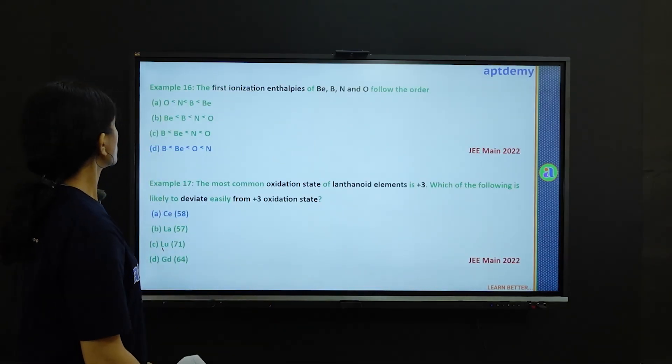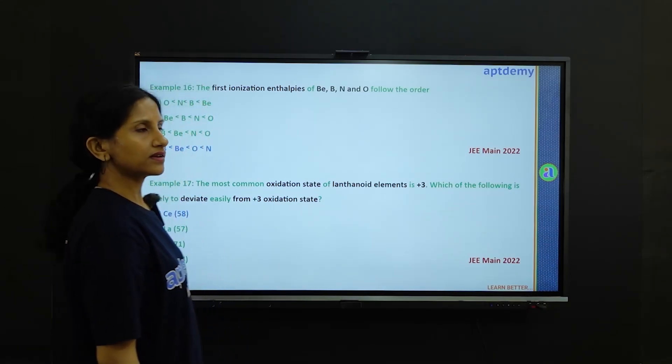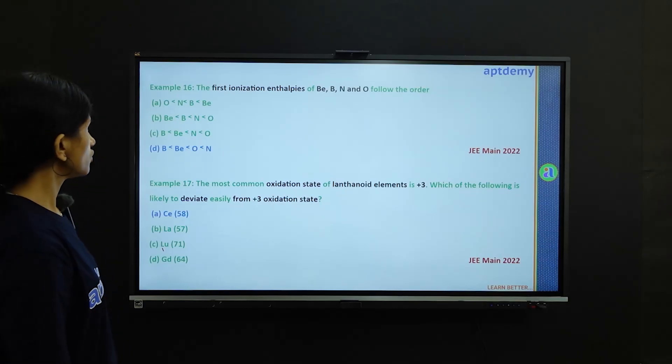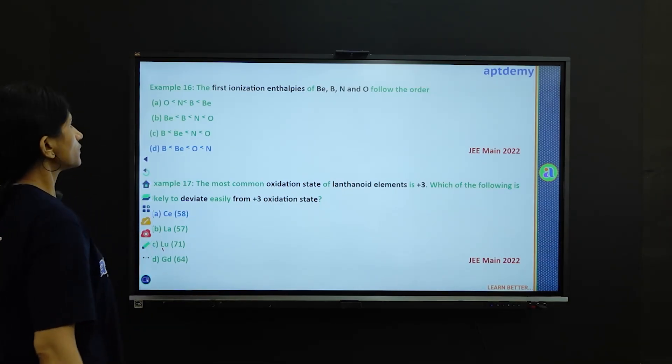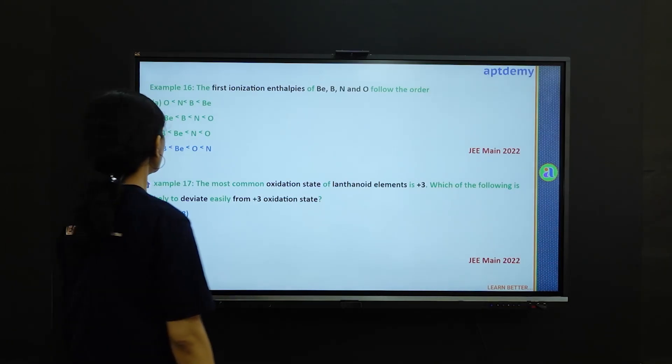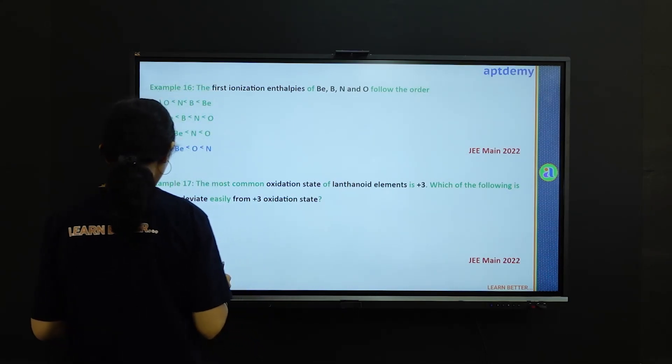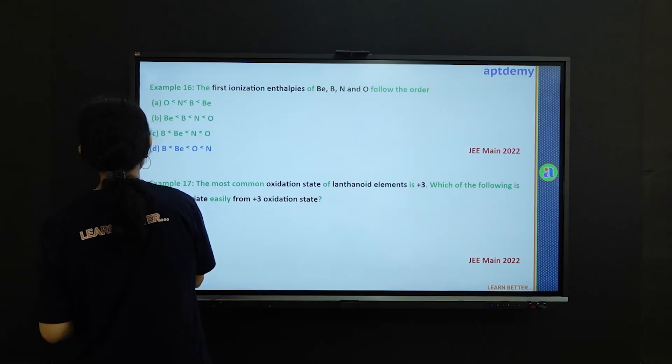Now on to example 16. These two problems are given from JEE Main exams of 2022. Example 16 is asking the first ionization enthalpies of beryllium, boron, nitrogen, oxygen will follow the order.